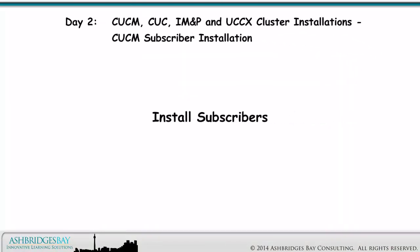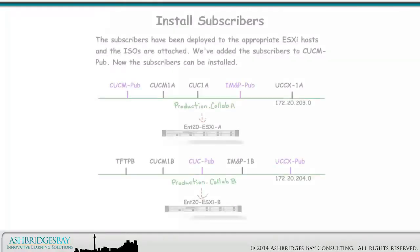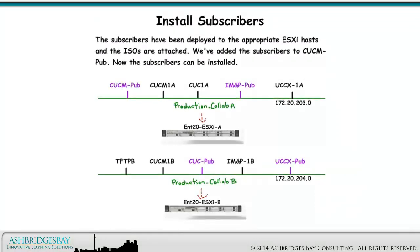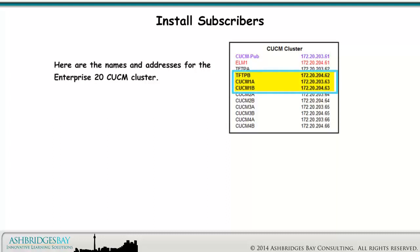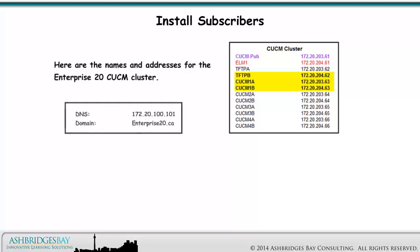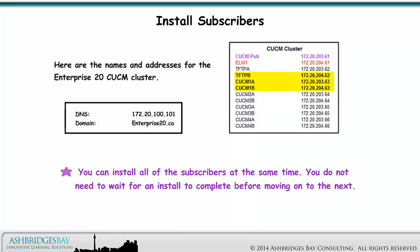Now we install the subscribers. The subscribers have been deployed to the appropriate ESXi hosts and the ISOs are attached. We've added the subscribers to CUCMPub, so now the subscribers can be installed. Here are the names and addresses for the Enterprise 20 CUCM cluster. We've assigned names and addresses for additional servers we don't need right now but may experiment with in the lab. The DNS is 172.20.100.101 and the domain name is Enterprise20.ca. You can install all of the subscribers at the same time — you do not need to wait for an install to complete before moving on to the next.